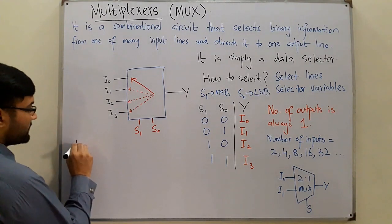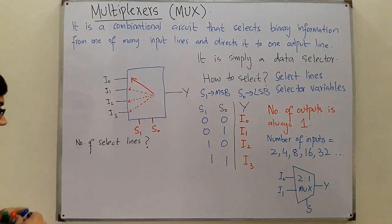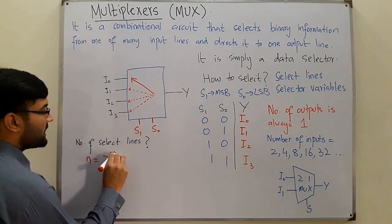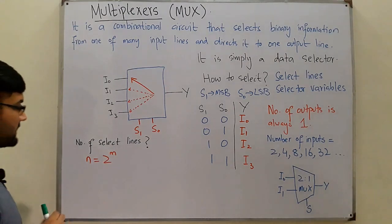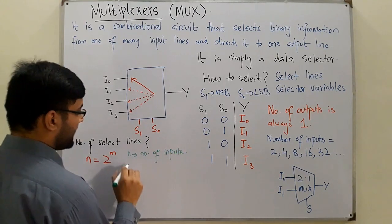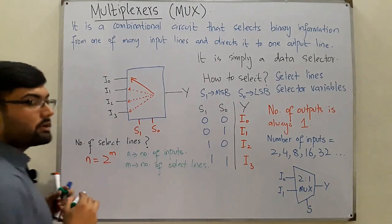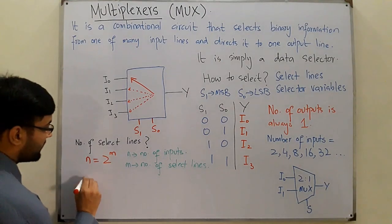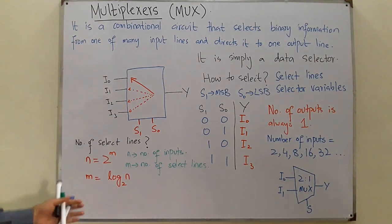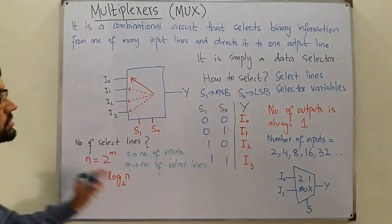How do we decide the number of select lines? We use the formula n = 2^m, where n is the number of inputs and m is the number of select lines. Rearranging, m = log₂(n). That is how you calculate the number of select lines.